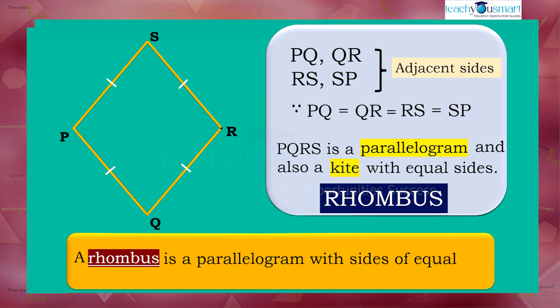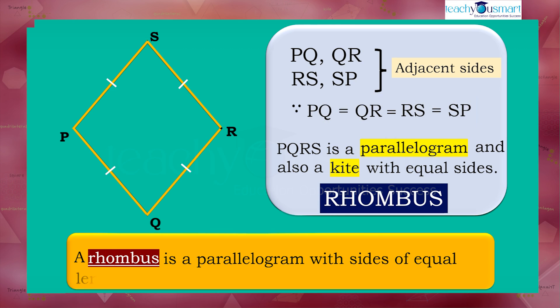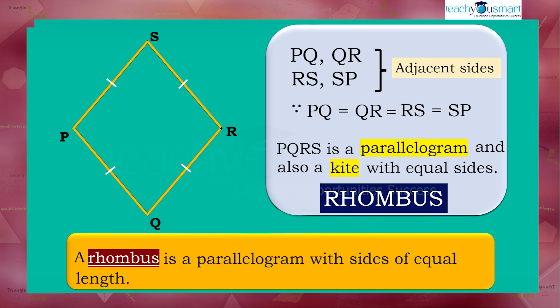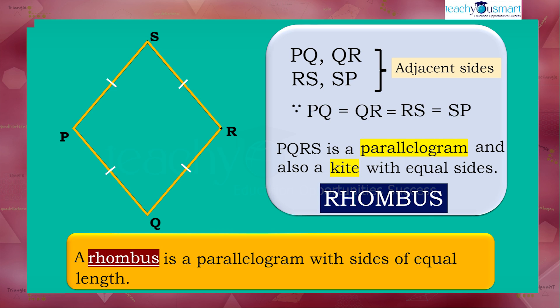Since PQRS is a parallelogram and also a kite with all sides equal, it is called a rhombus. That is, a rhombus is a parallelogram with sides of equal length, so a rhombus has the properties of a parallelogram and also that of a kite.